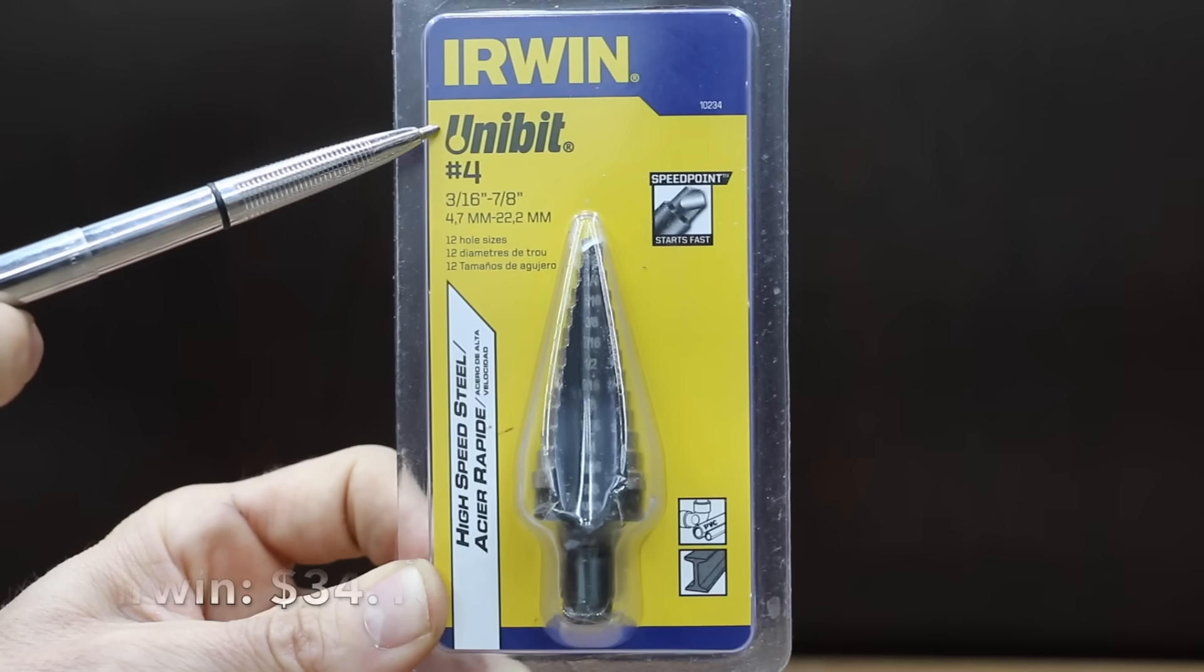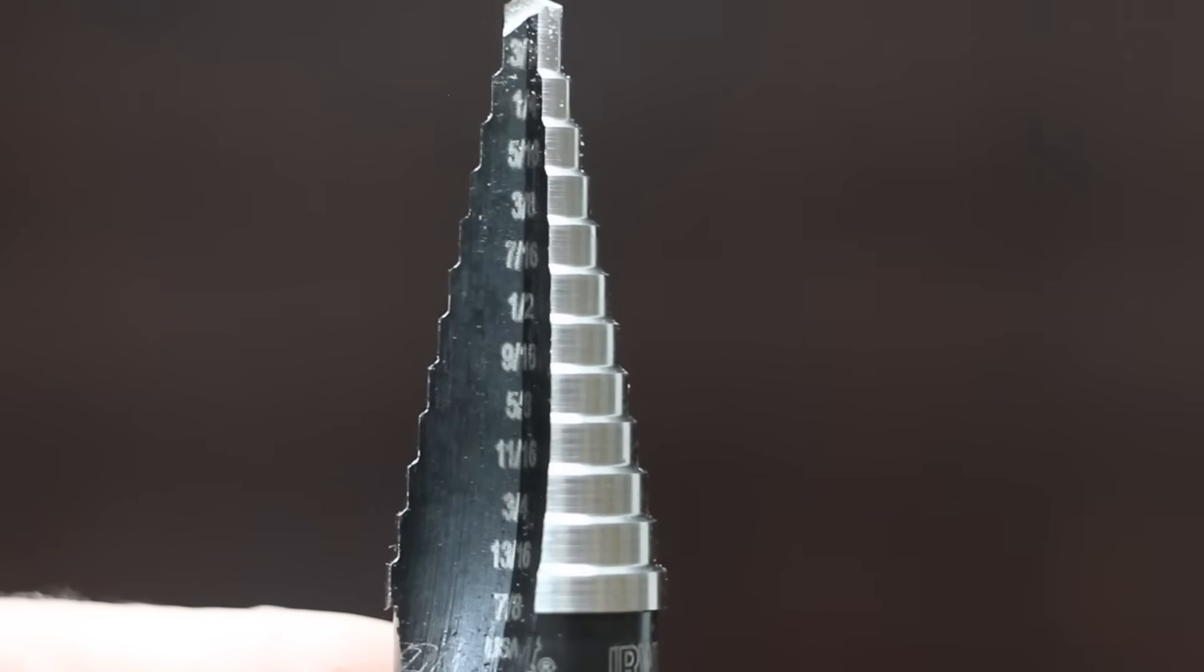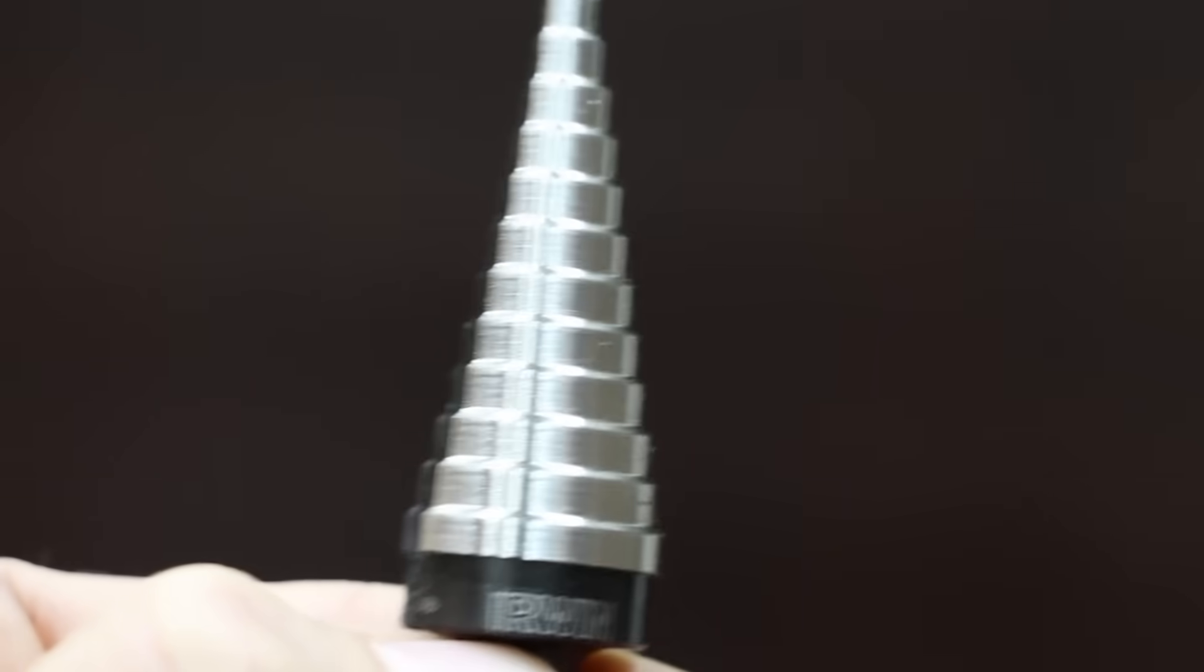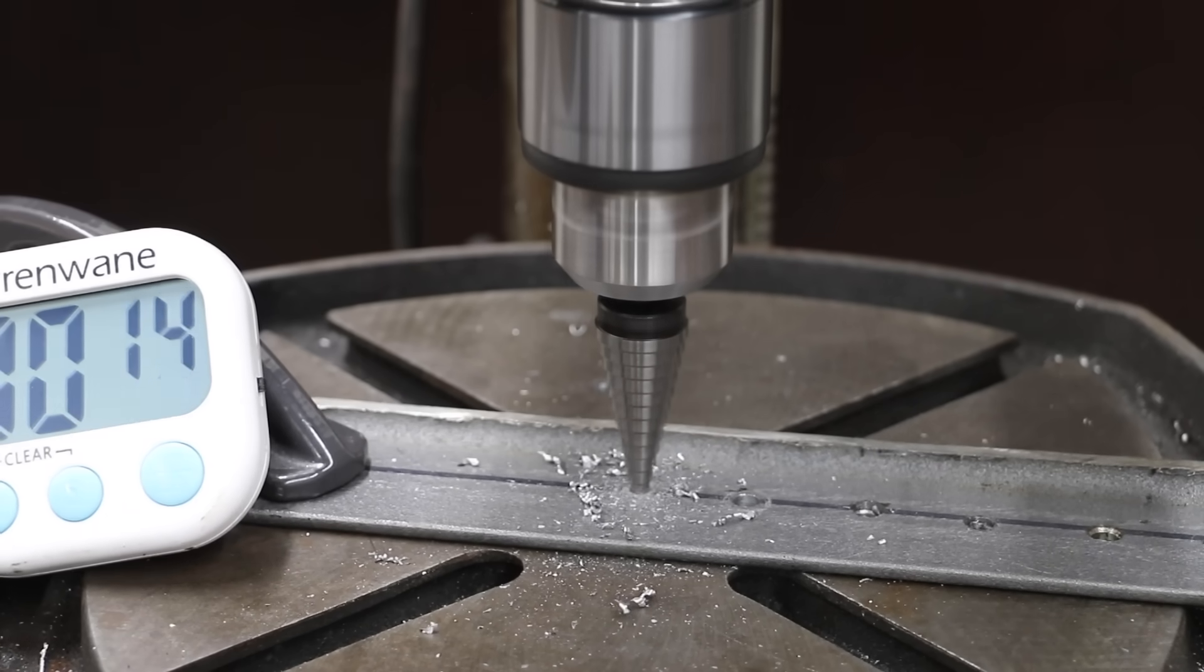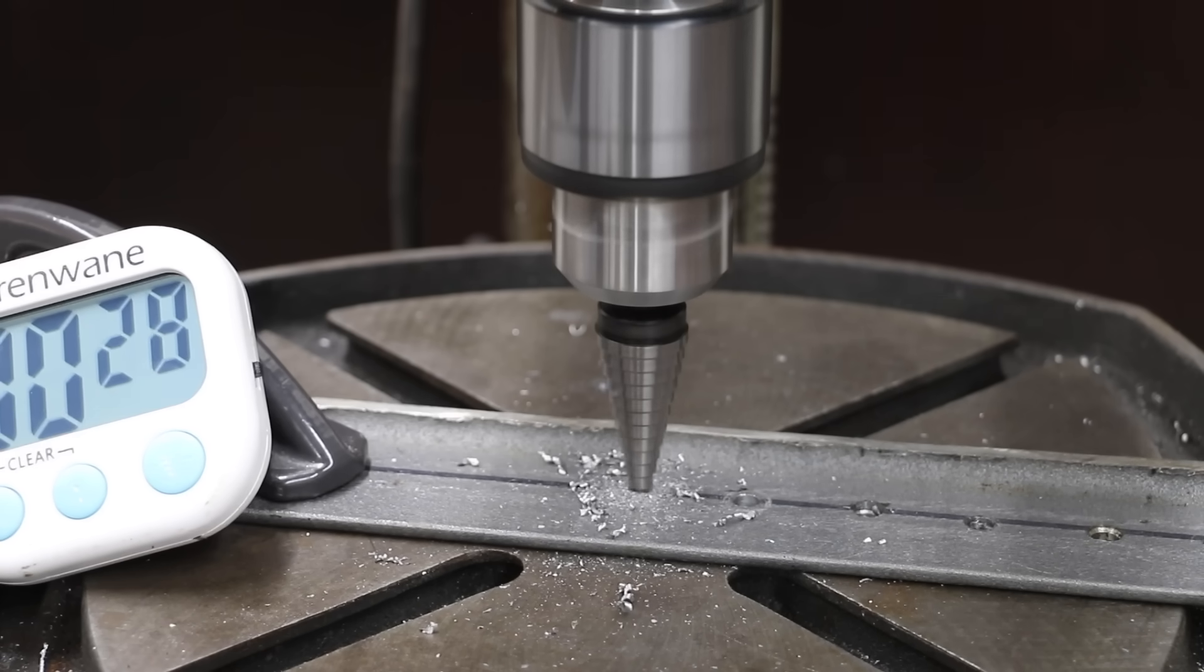The Irwin Unibit costs $34.16. It's a self-starting step drill that has a single flute cutting edge to give more control and produce true round holes. Made in USA. The Irwin brand is a high quality tool, but the single flute design really held it back, taking right at 30 seconds to punch through the mild steel.